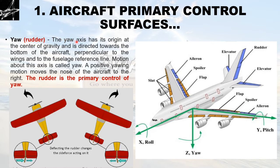The yaw axis has its origin at the center of gravity and is directed towards the bottom of the aircraft, perpendicular to the wings and to the fuselage reference line. Motion about this axis is called yaw. A positive yawing motion moves the nose of the aircraft to the right. The rudder is the primary control of yaw.